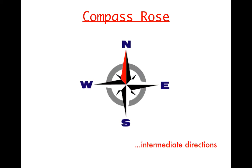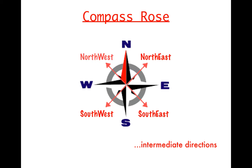The compass rose also tells us about intermediate directions. Intermediate directions are the directions that are directly in between the cardinal directions. These can be characterized as northeast, southeast, southwest, and northwest. Those are what make up the intermediate directions.